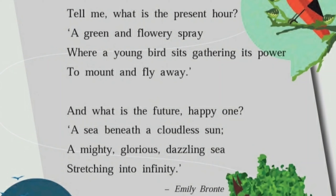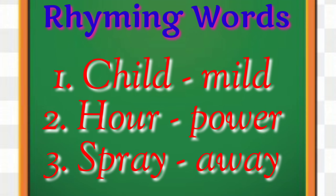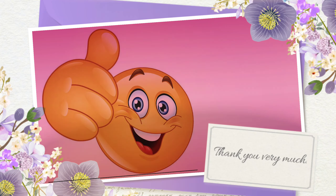'Cloudless' means the sun is not shaded by clouds — it is clear. The child's future will be mighty (strong), glorious (happy), dazzling (shining brightly), and stretching into infinity. 'Infinity' means endless. So the child wants to achieve endless things in life, and the poet expresses how bright the child's future will be.